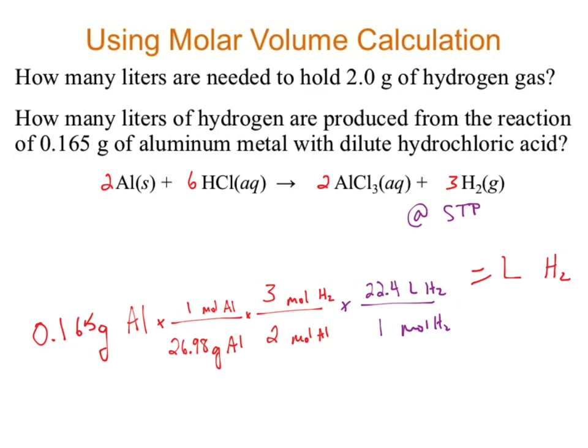This is doing three conversions. The standard method would be to memorize an equation to solve each step — that's three equations to memorize. Not only that, but you'd also need to memorize that 26.98 comes from the periodic table, that the mole-to-mole conversion comes from your balanced equation, and that 22.4 liters equals one mole. That's six things to memorize.